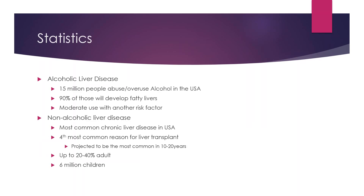For alcoholic liver disease in this country, there are 15 million people that abuse or overuse alcohol in the USA. 90% of these will develop fatty liver disease, especially with a moderate use and another risk factor. The non-alcoholic liver disease is the most common chronic liver disease in the United States. It is the fourth most common reason for liver transplant in this country, and in the next 10 to 20 years will be the most common reason. Up to 20 to 40% of adults in this country have fatty liver disease, and 6 million children.